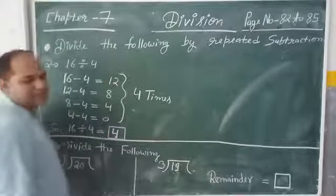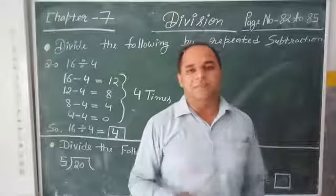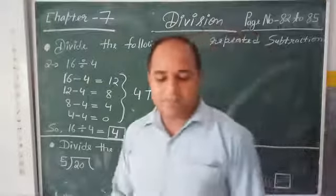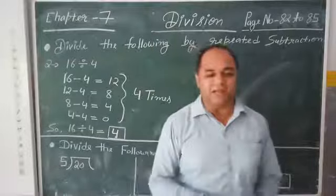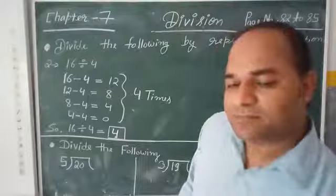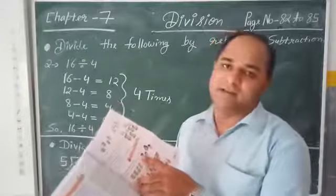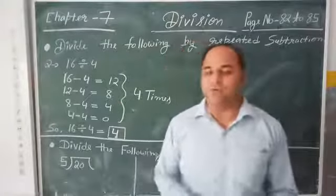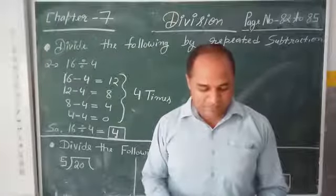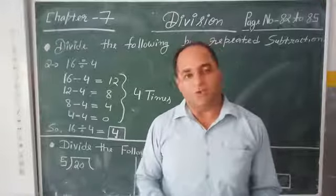So children, the last question you will solve yourself, which is given at page number 82. And now we move on to page number 83. The question is: divide the following — divide 12 copies among 4 children. This is a very easy question and you can do it yourself. You will solve the questions given at page number 83 yourself.